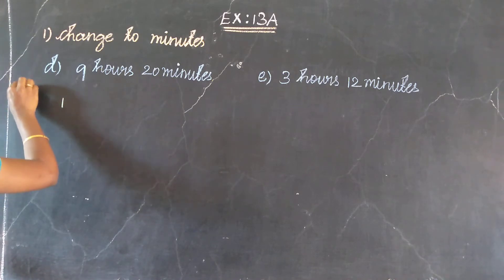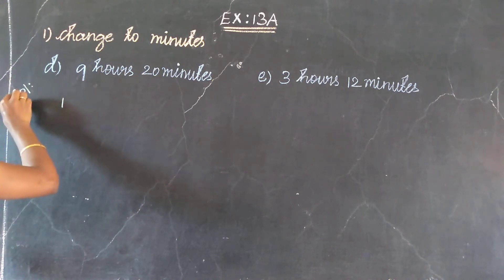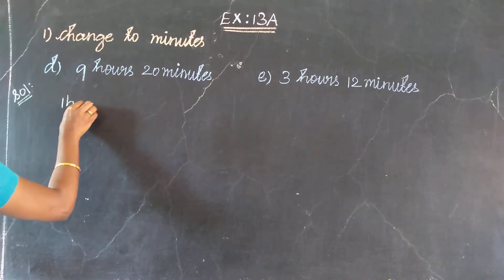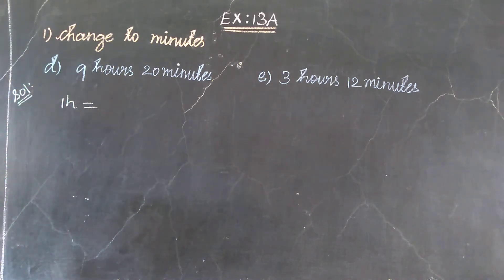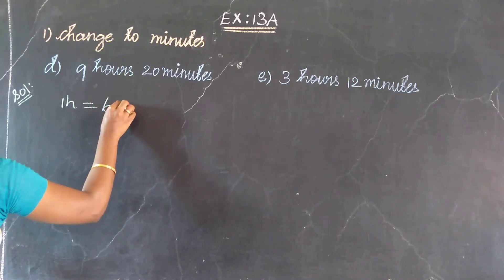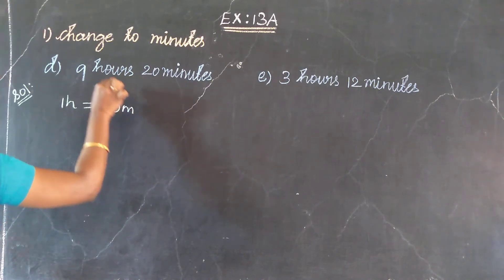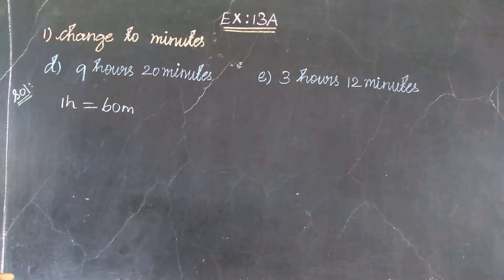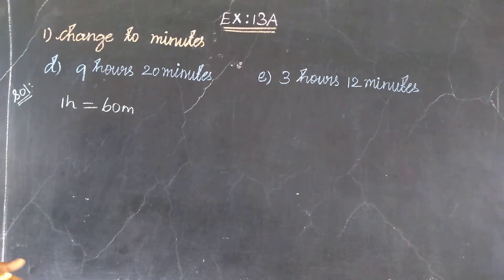Solution: 1 hour which is equal to — how many minutes? 60 minutes. So, in this, hours need to be changed to minutes. Hours multiplied to change to minutes.